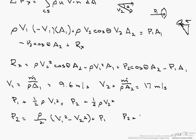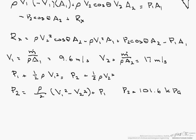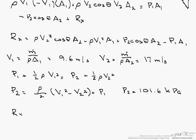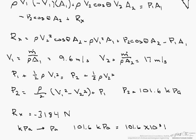So p2 is 101.6 kilopascals. Now when we put our numbers back into our R sub x, we end up with 3,000 minus 3,184 newtons. One of the things to be careful of is that our pressure is given in kilopascals. You have to go from kilopascals to pascals. So for example, 101.6 kilopascals, you are going to have to write it as 101.6 times 10 to the 3rd pascals.